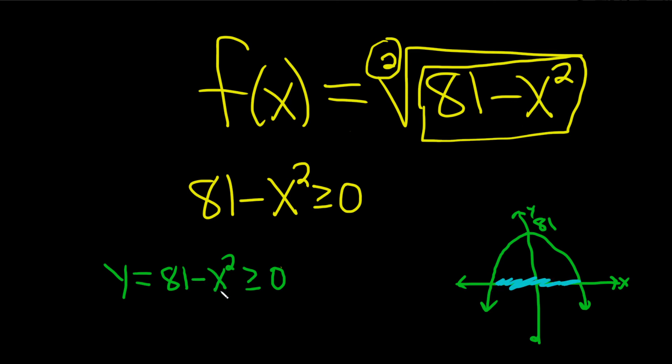Well, what makes this zero, right? Nine and negative nine. So this is nine, and this is negative nine.